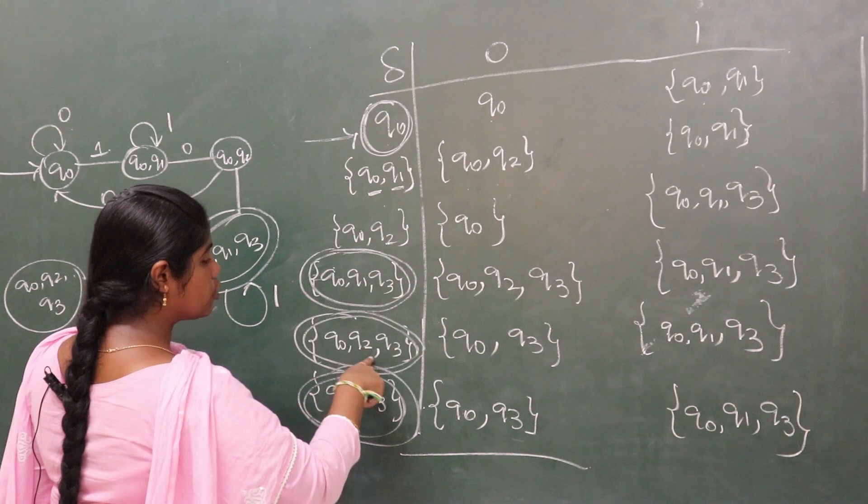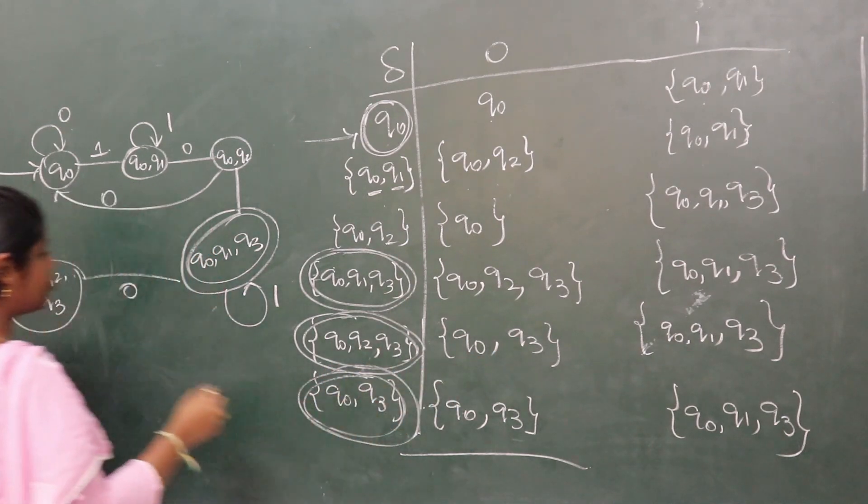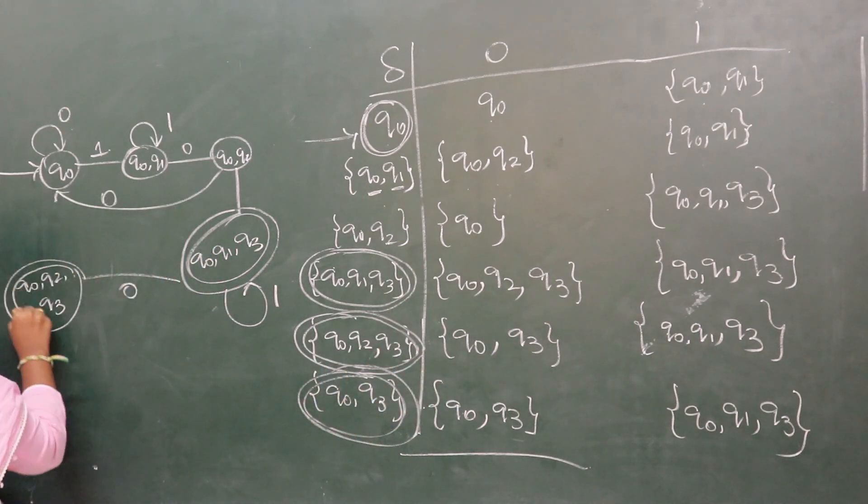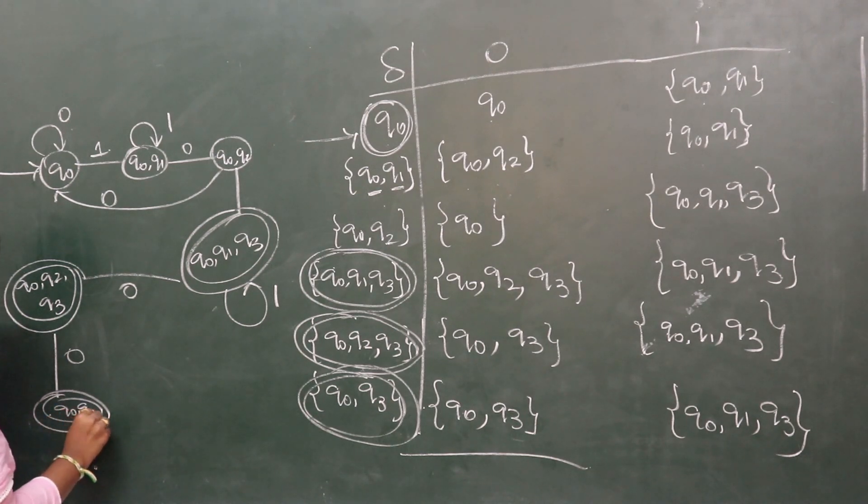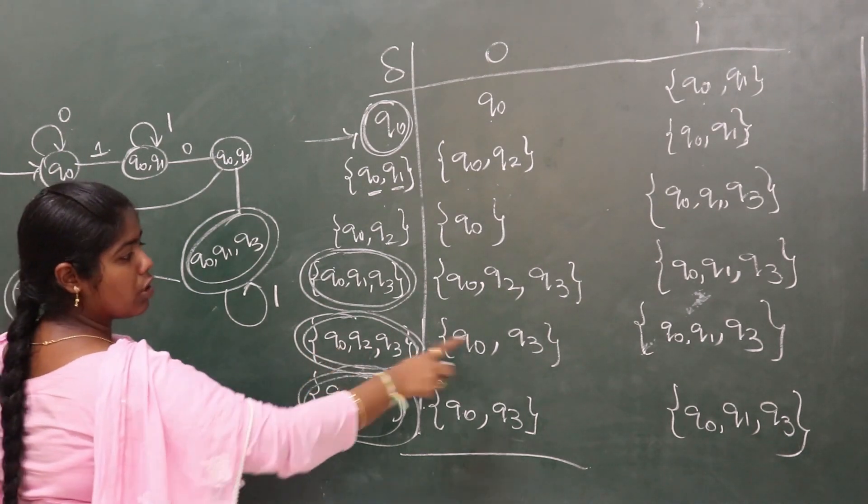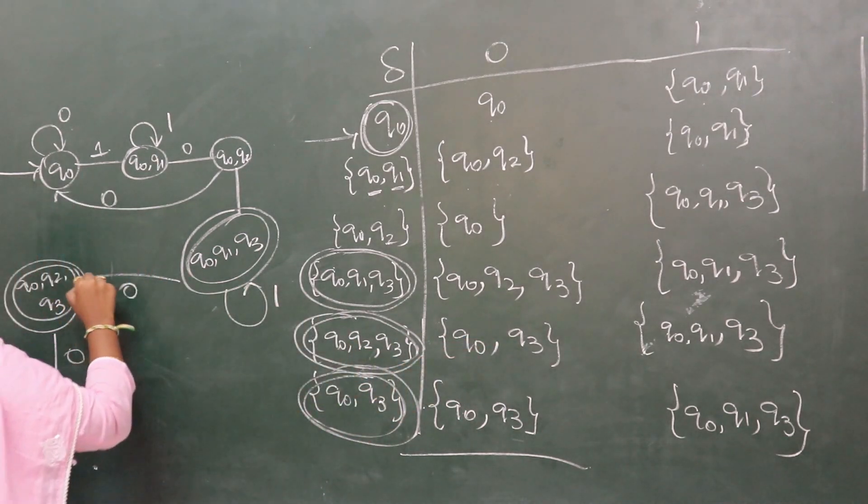q0, q2, q3 is also a final state. On transition with 0, it goes to a new state called q0, q3. q0, q2, q3 on 1 goes to q0, q1, q3.